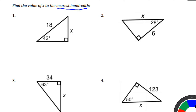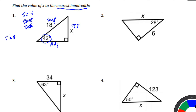For number one, the first thing I would do is write SOHCAHTOA. Then if we look, the opposite side is x from the angle. The adjacent side is not labeled at all, and the hypotenuse is given. So we know we want to have the opposite side in our trig function, so it's not going to be cosine. We also know we want the hypotenuse because it's given, so it's not going to be tangent. So for question one, we're going to use the sine function — sine of the angle equals opposite over hypotenuse. That's what SOHCAHTOA stands for.